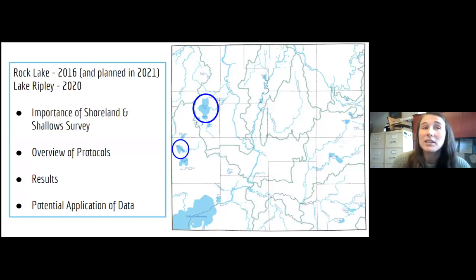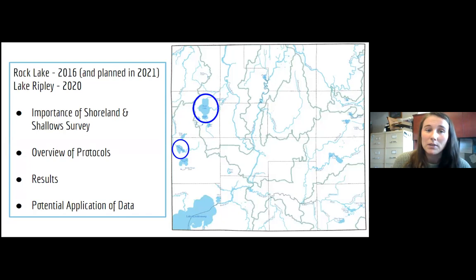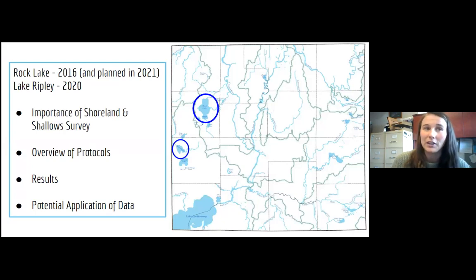During this presentation we will be going over the importance of shoreland and shallow surveys, the protocols associated with these surveys, how we analyze the results, and the ways in which we use the data. Rock Lake, the larger lake on the map circled in blue, had a shoreland and shallow survey completed back in 2016 with another planned for 2021. Lake Ripley just completed its survey during the summer of 2020, with the next anticipated for summer 2025.